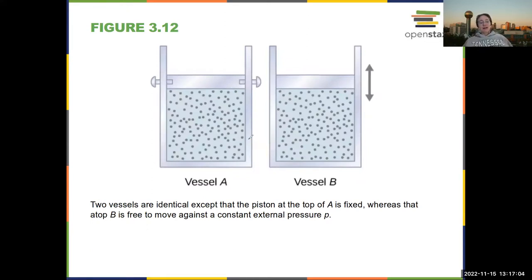And depending on how you construct the system, you can engineer different types of processes. So here, if you have the piston fixed, then it's constant volume or isochoric. And if you let the piston move up and down, it is staying in equilibrium with the room, so it is constant pressure.